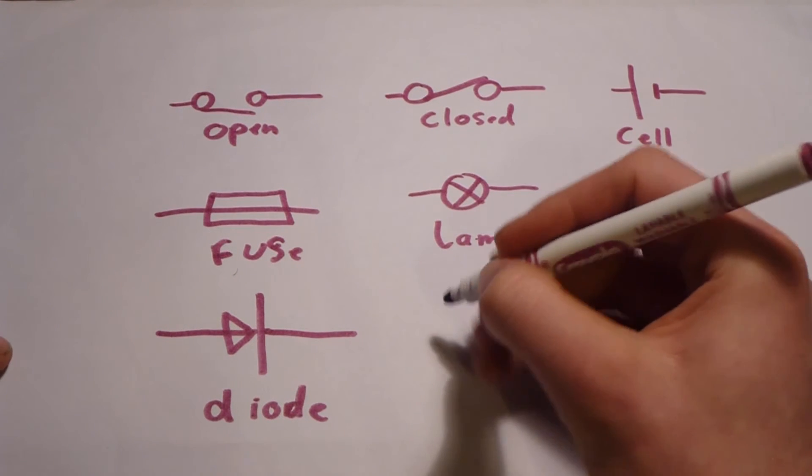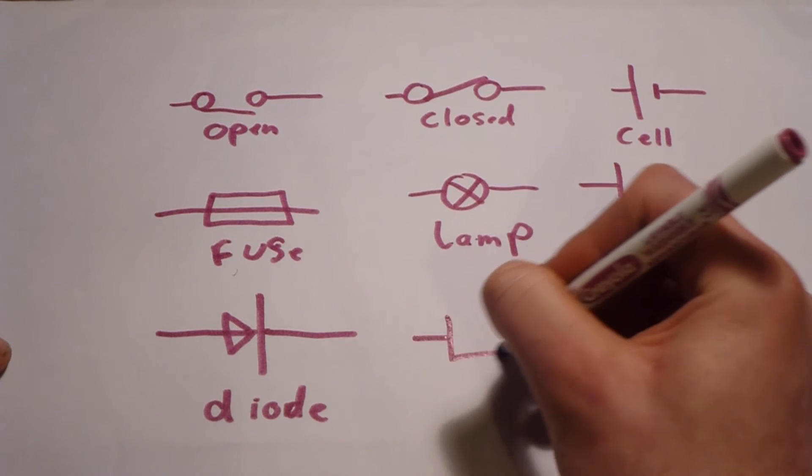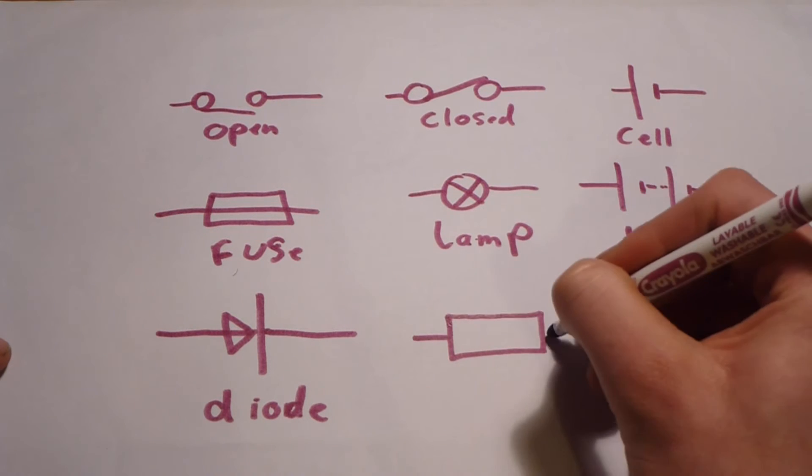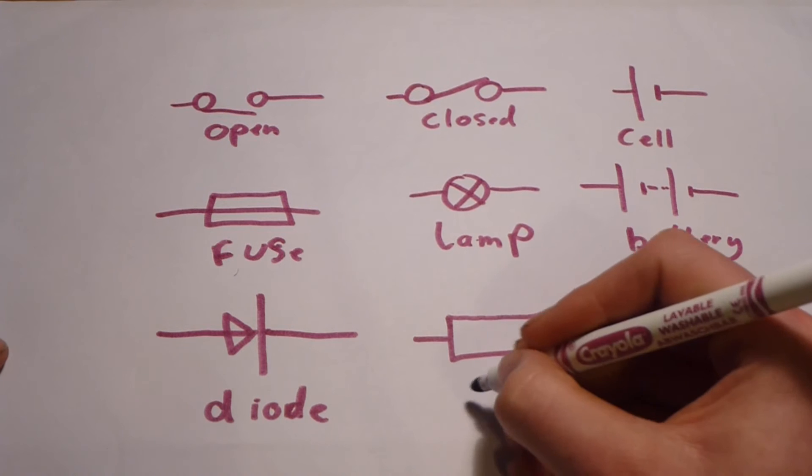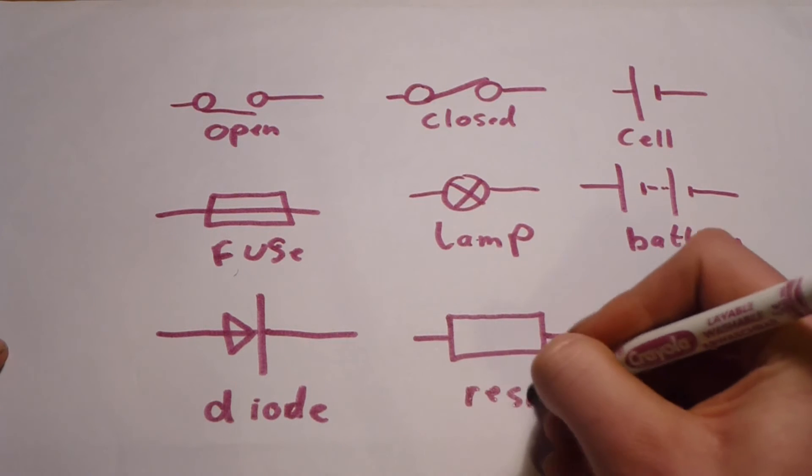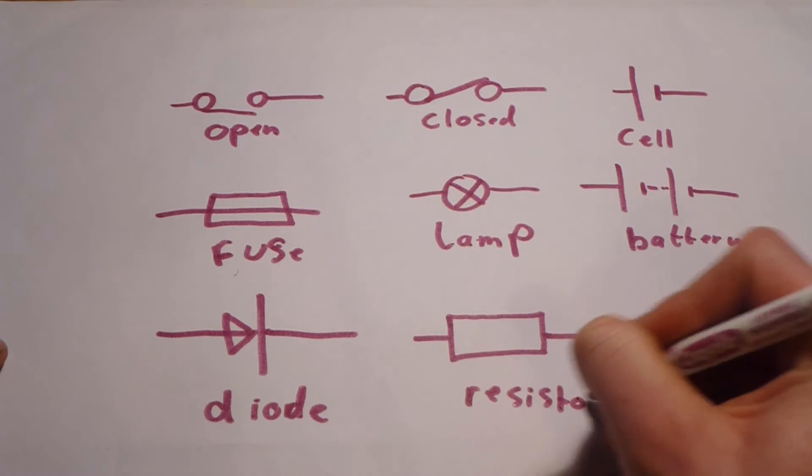After the diode, we have a resistor. It's drawn very similar to a fuse, but does not have the wire going all the way through it.